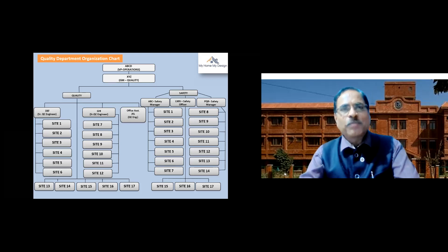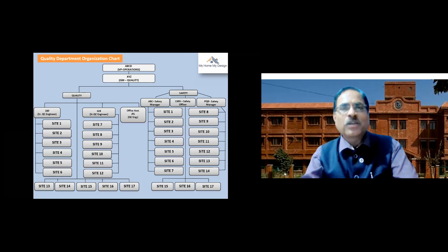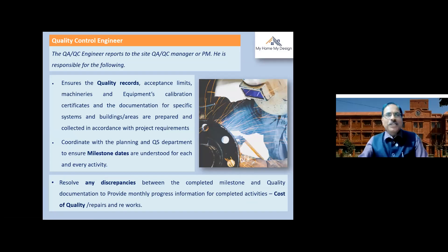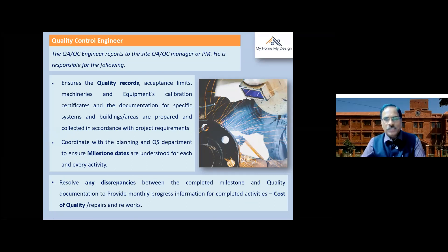This is the quality department organization chart for a standard project. The VP is the operations head, and the quality head reports to the VP, managing both quality and safety organizations. Respective engineers and teams across many sites can be monitored. The role of a quality control engineer is very important — the QC engineer reports to the project manager and is responsible for ensuring quality records and acceptance limits, such as SR minus 1mm, 2mm, 3mm tolerances.